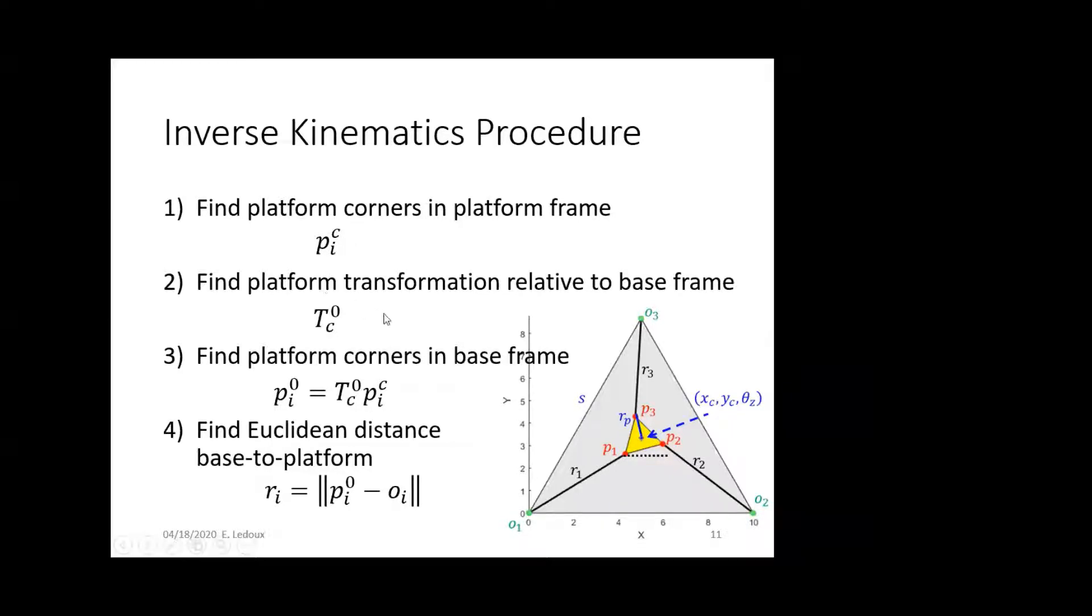And find the platform transformation relative to the base frame. So, that's going to be, if zero is the base frame, then we need to know what's the transformation to get from here, this global X, Y to here, this X, Y of the platform frame.